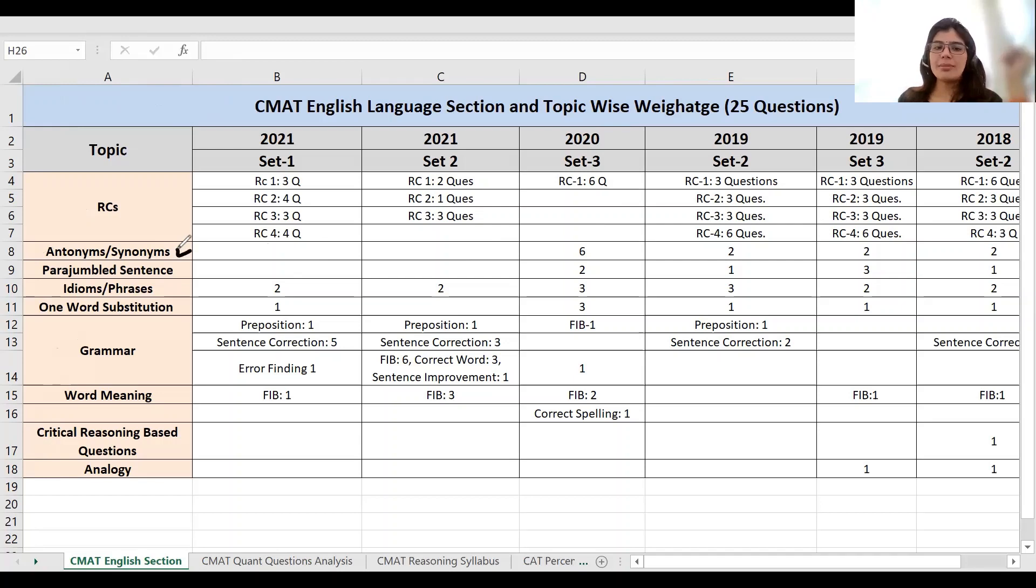Now if we come to second, antonym synonyms. If you see in 2020, there are six questions. In 2019, there are two questions, here two questions, here two questions. So that means you have antonym synonyms practice. Keep the para jumbled sentence. If you see the para jumbled sentence, there were two pages here, there was one, here there were three, here there were one. That means you practice the para jumbled.